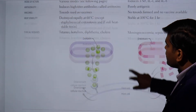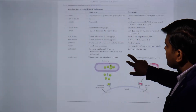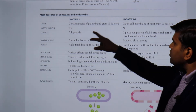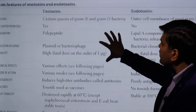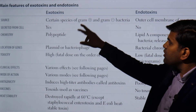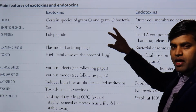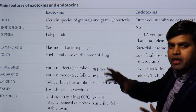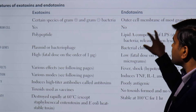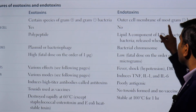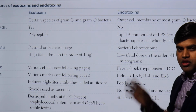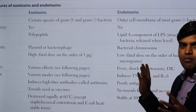Exotoxin is present in both gram-positive and gram-negative bacteria, so all bacteria can secrete exotoxin. Whereas endotoxin is secreted only from the outer cell membrane of gram-negative bacteria, so it is limited to gram-negative organisms.